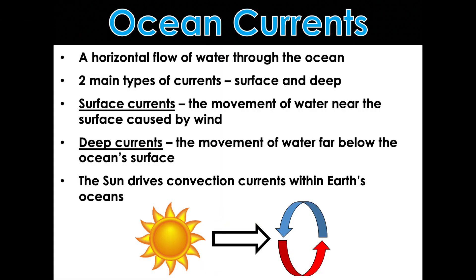So, ocean currents are horizontal flows of water through the ocean. There are two main types, surface currents and deep currents. The surface currents are the movement of water near the surface caused by wind. And the deep currents are movement of water far below the Earth's surface, the ocean surface.